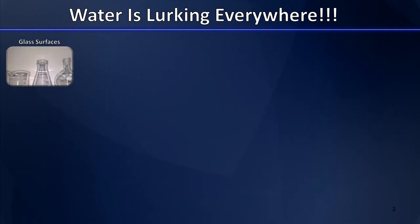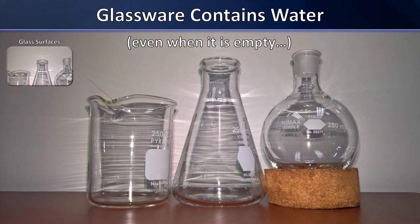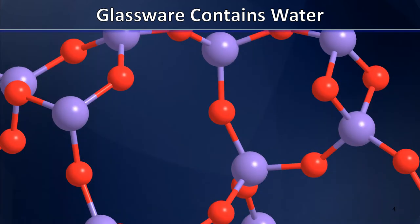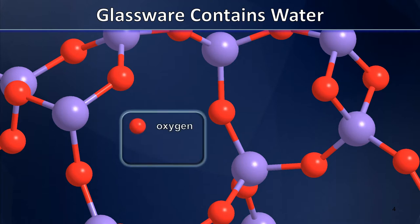So let's think a little bit about what the surface of glassware really looks like. Although you might find it hard to believe, your glassware contains water even when it's empty. In order to understand the reason why, we have to look at our lab glass at the molecular level. Here we are inside the wall of one of our flasks, and deep within the matrix of that glassware we find two types of atoms: oxygen and silicon.